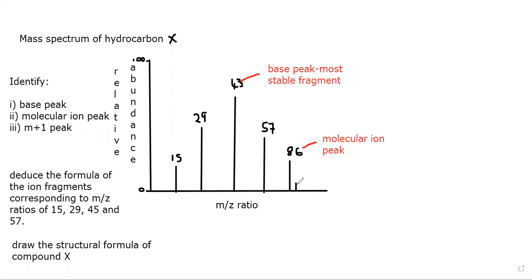On some mass spectra you might see a very short line right next to the molecular ion peak. That short line is your M+1 peak. You have to look for it next to the molecular ion peak — not next to the base peak or any other peaks. Next to the molecular ion peak, that's your M+1 peak.